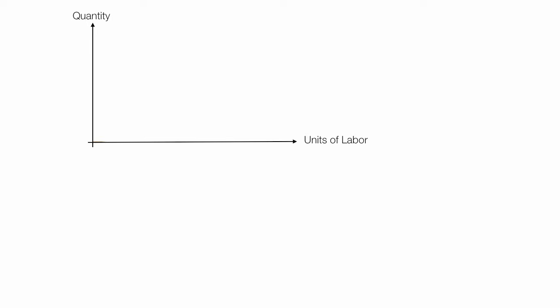As labor is added, I produce a quantity. L1 is my labor, and Q1 is the quantity. If I add more labor, I produce more.